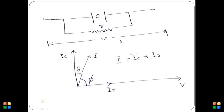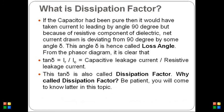I have applied a voltage V across the terminals of the capacitor and drawn the phasor diagram of this circuit. IC is the capacitive leakage current, IR is the resistive leakage current, and the net current is the vector sum of IC and IR. This net current I makes an angle delta with IC. Calculating tan delta: tan delta equals IR divided by IC, that is resistive leakage current divided by capacitive leakage current. This tan delta is called the dissipation factor and the angle delta is called the loss angle.